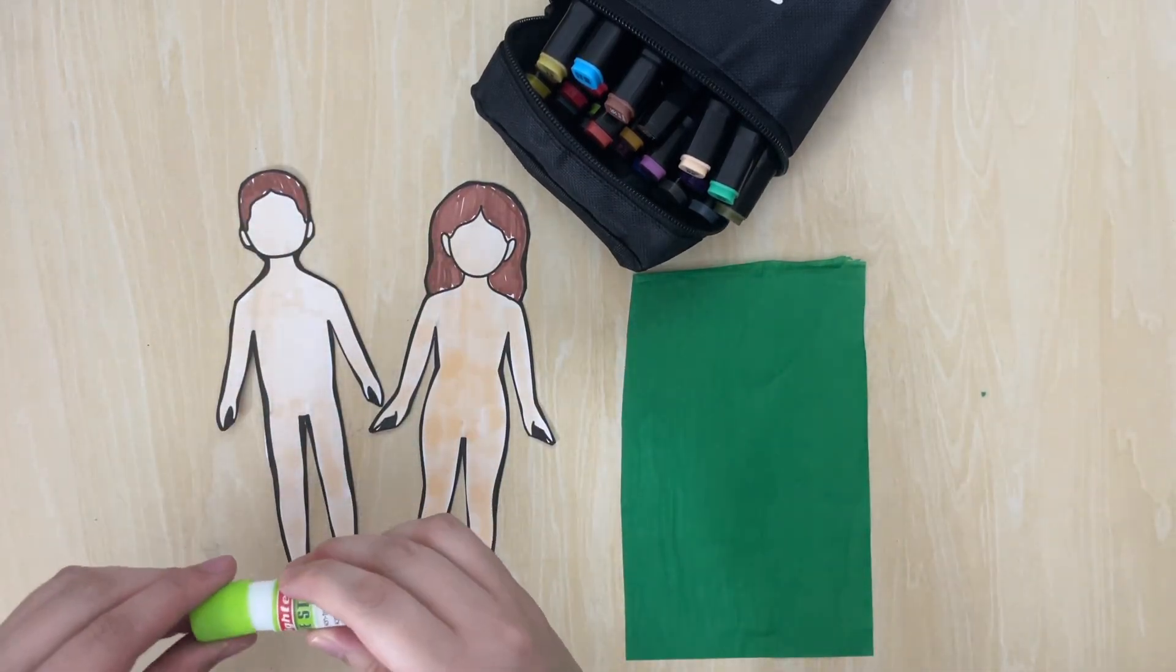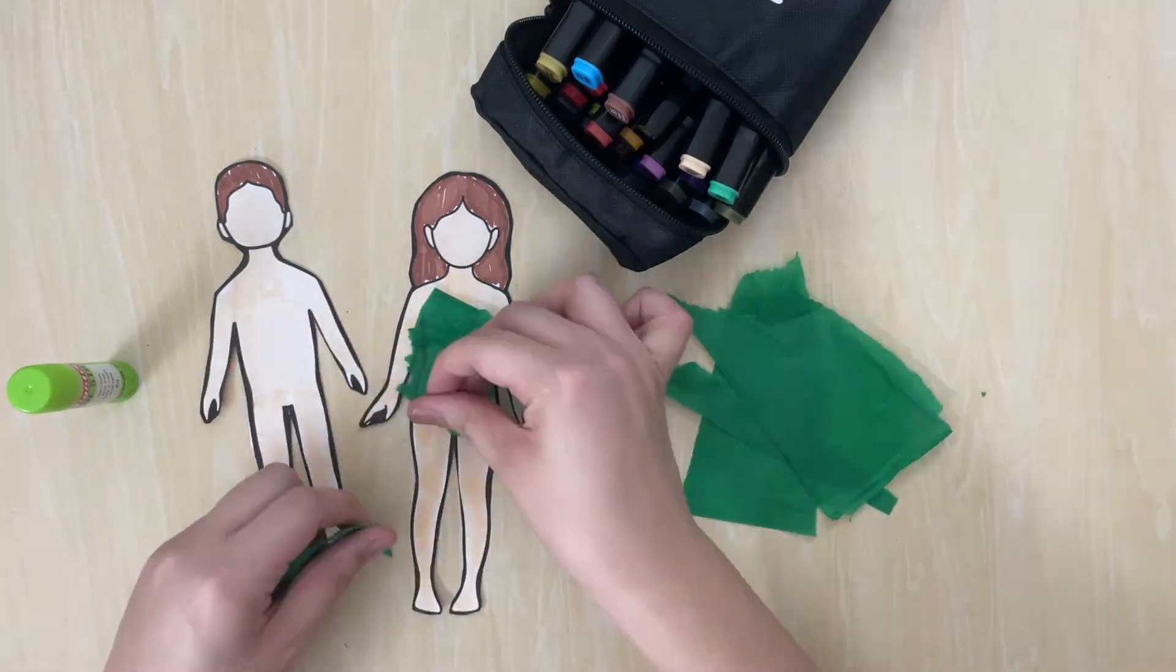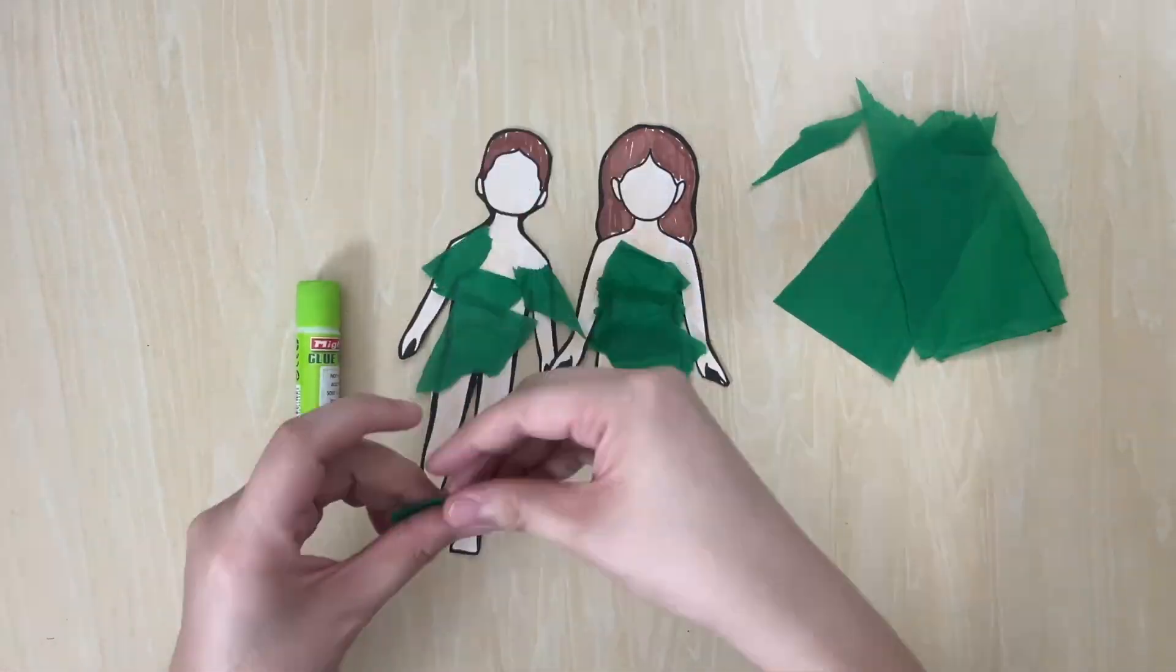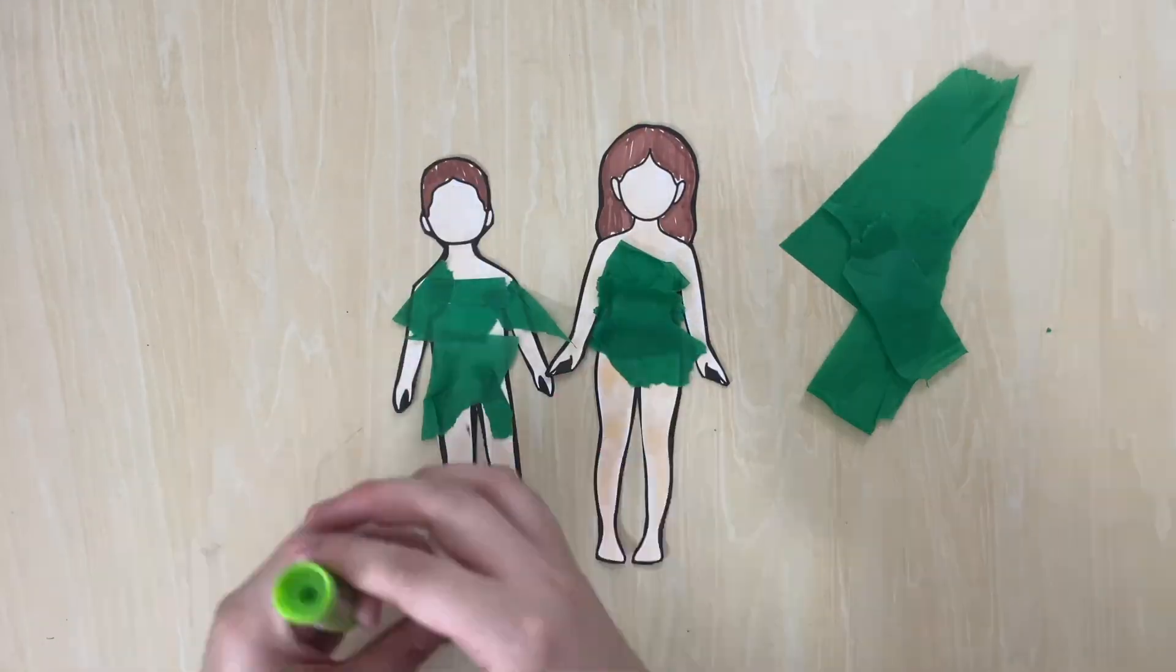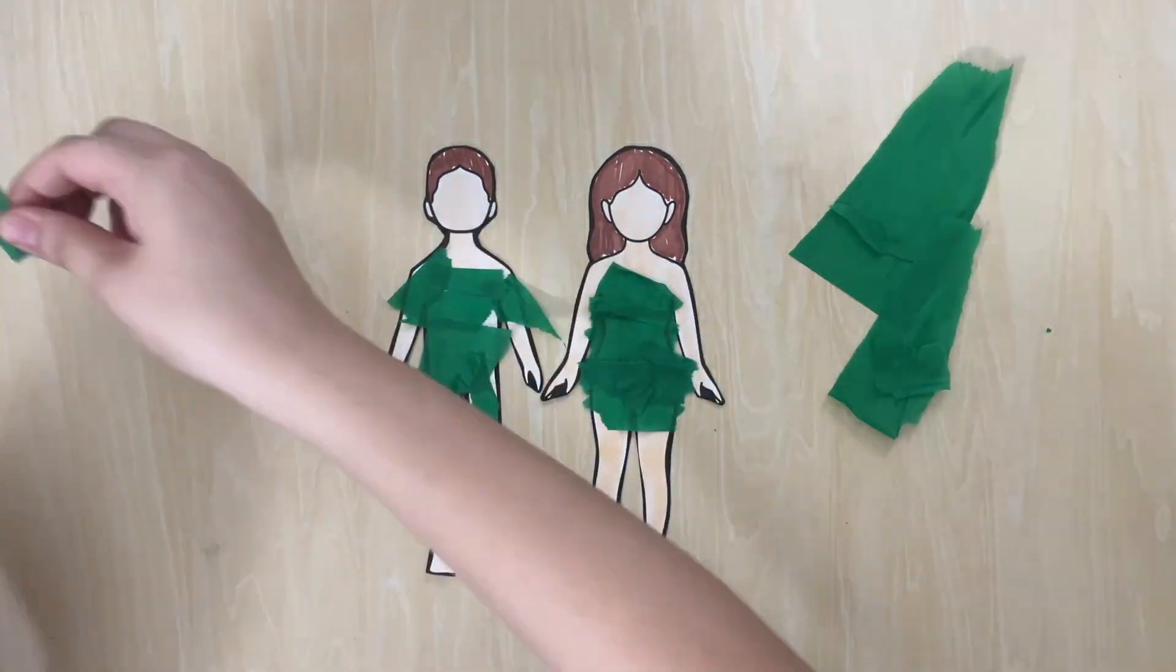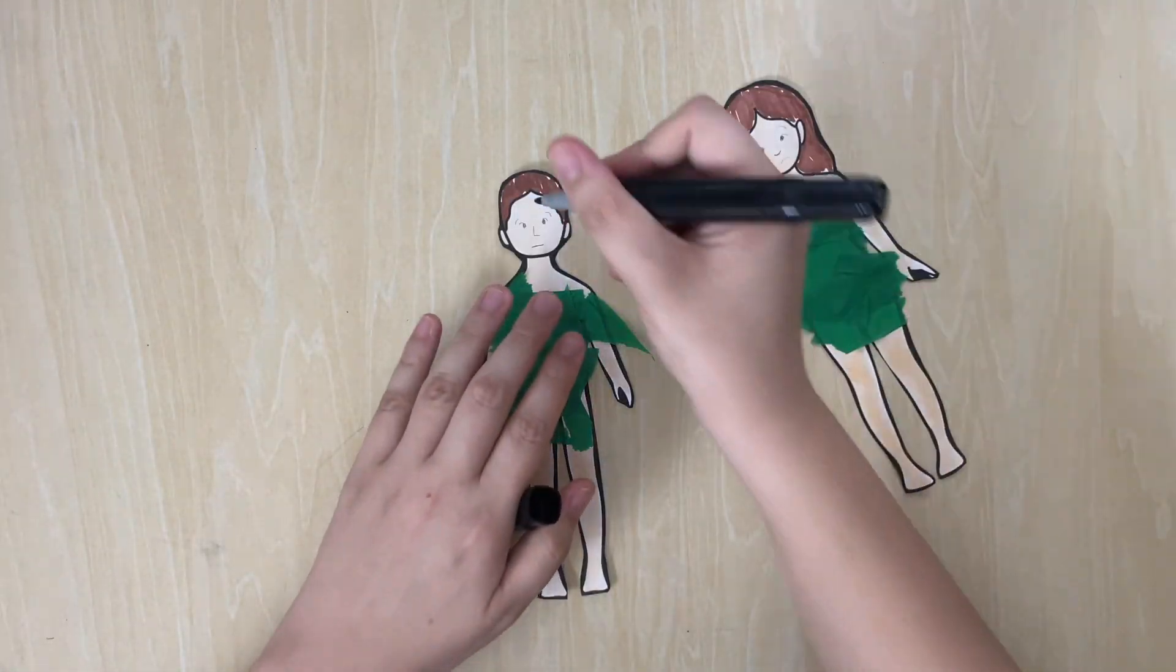Now start ripping the Japanese paper into pieces and paste it onto the paper dolls. And there, it's like they're wearing clothes.